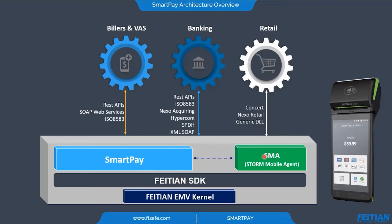We also have SMA, which is the TMS mobile agent. The name of our TMS is STORM. SMA helps us communicate between STORM and SmartPay. For example, we can push merchant parameters and other types of parameters. To do that, we need to specify the package name of the application on STORM. Also, after we inject the key on STORM, we can push them directly to SmartPay, and we need to specify the package name on STORM.